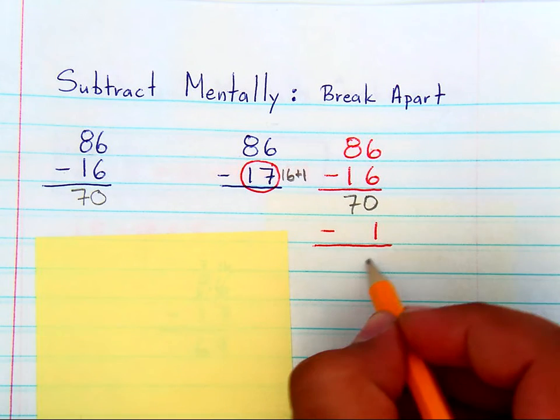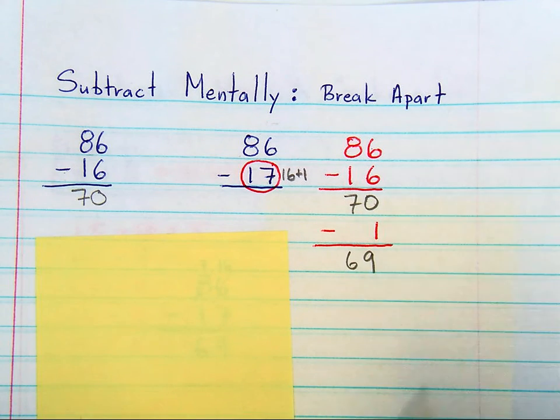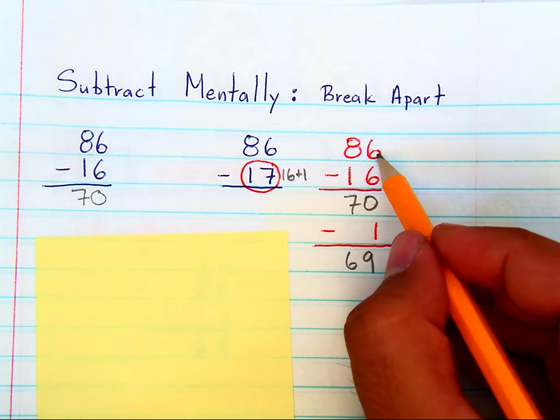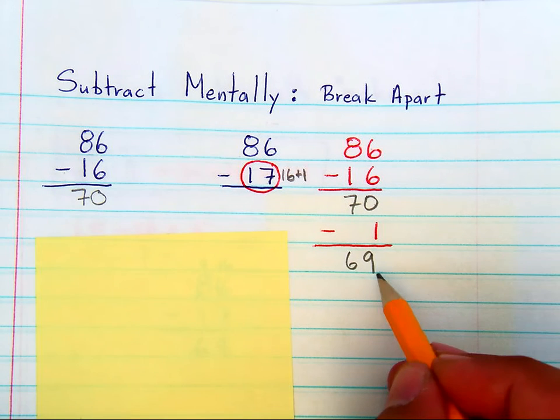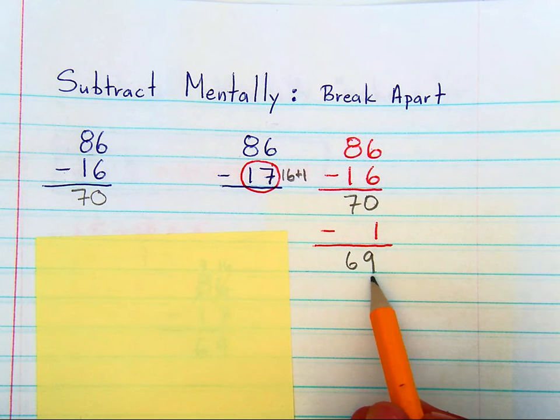And if you know that you're just taking one more away from 70, then your ability to subtract odd numbers like this becomes something you can do in your head. It's not something you'll learn overnight and be able to do perfectly every time. It will take practice, just like anything.